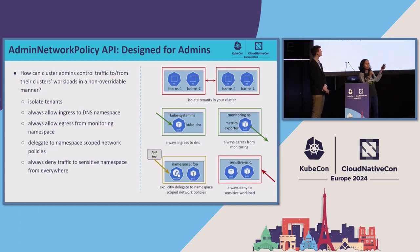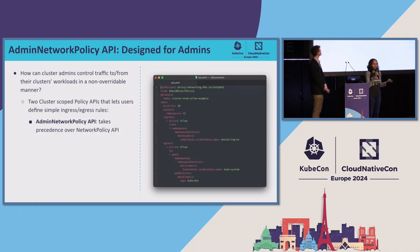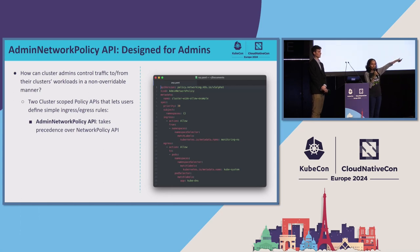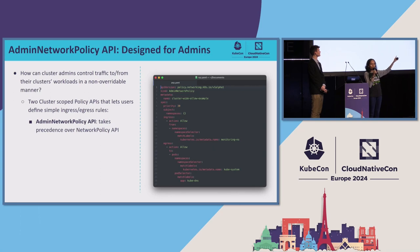The last use case is default deny to a sensitive namespace — the explicit deny. There are two new APIs as part of this feature. The admin network policy API — this is how a sample YAML looks. It's similar to network policies with ingress, egress, and selectors, but it is cluster scoped. Notably, it has an explicit priority field, so you can have multiple admin network policies ordered by priority — zero being the highest, increasing numbers meaning lower precedence.